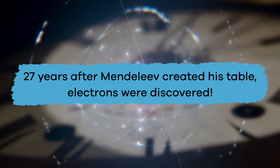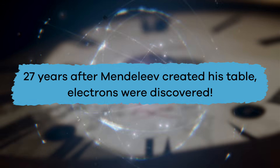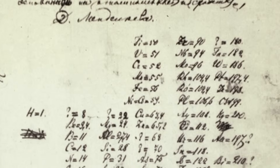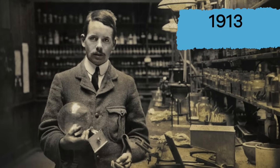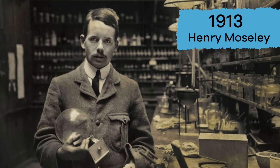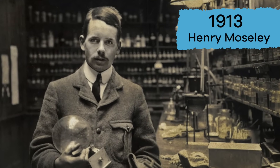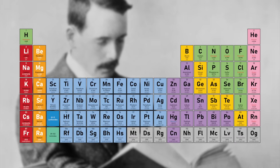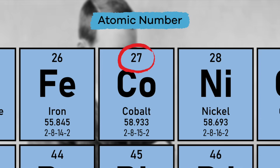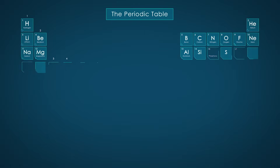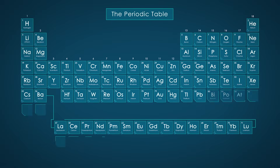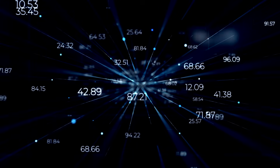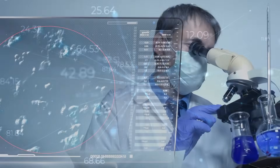27 years after Mendeleev created his table, electrons were discovered, which meant that his table needed to be revised. In 1913, a chemist named Henry Moseley discovered that elements are different from each other because their atoms have different numbers of protons, which led to the creation of the atomic number and the version of the periodic table of elements that we have today. In modern times, chemical elements are still arranged in order of their increasing atomic number, which is why this number is so important.